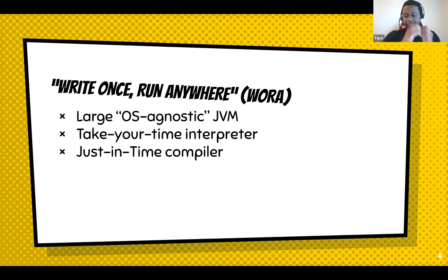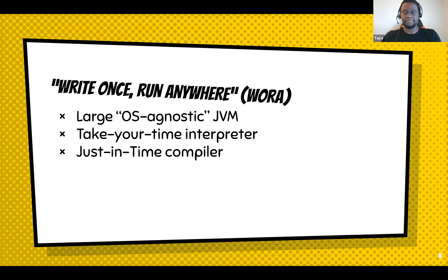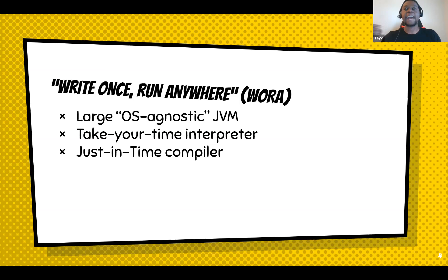Instead of taking your source files straight to machine instructions, there's an intermediate step called Java bytecode — class files — which are then converted at runtime to machine instructions. So every single time you run Java code it has to take that intermediate step. Over time Java blessed us with the just-in-time compiler, which after a couple thousand cycles will decide to compile that Java class into machine code.